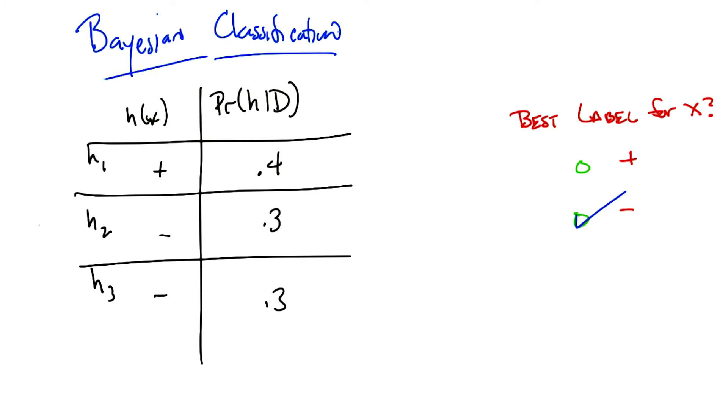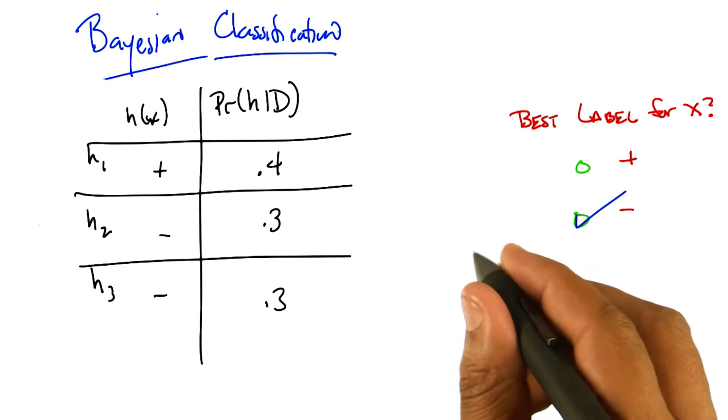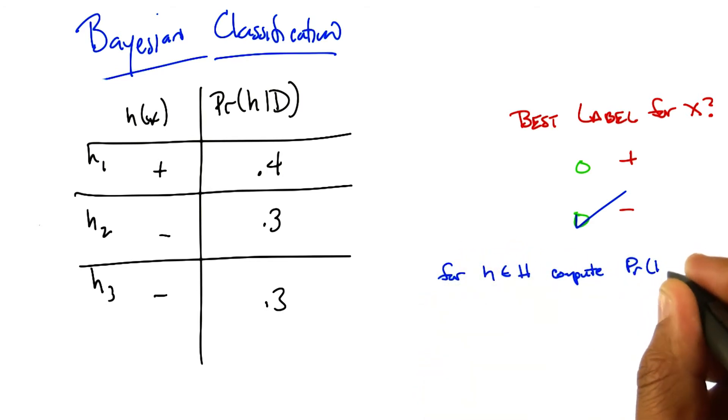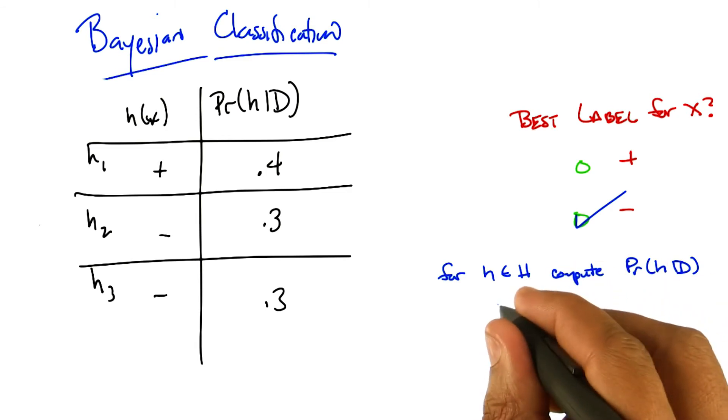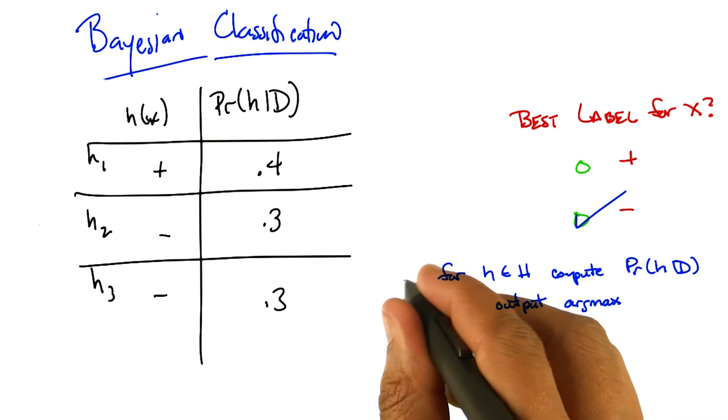And exactly as you point out, finding the best hypothesis is a very simple algorithm. Here, I'll write it for you, because we did it before. For every h in the hypothesis set, simply compute the probability that it is the best one, and then simply output argmax. That's how you find the best hypothesis.